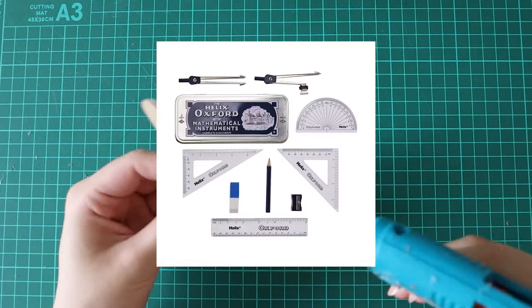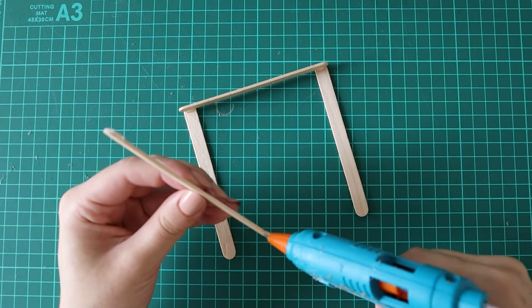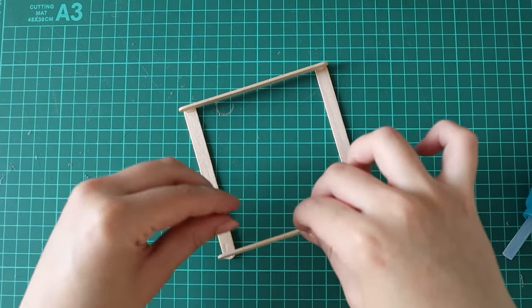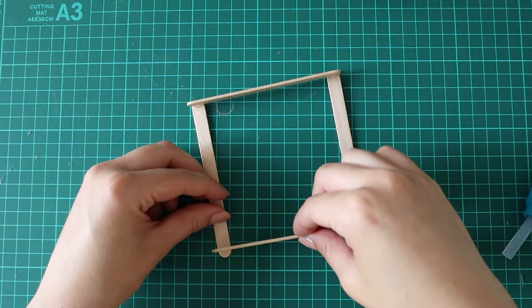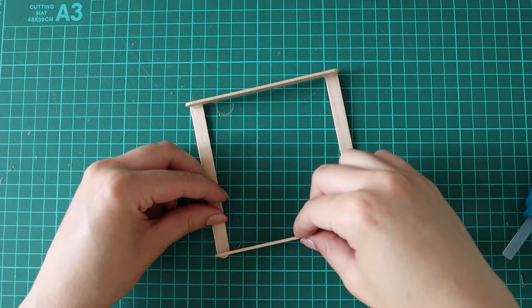Did you ever have a stationary set at school and have a set square in it that you never used? Like you'd use the ruler, protractor and compass but never the set square. Well I've found its purpose in life because it would have been great for this.